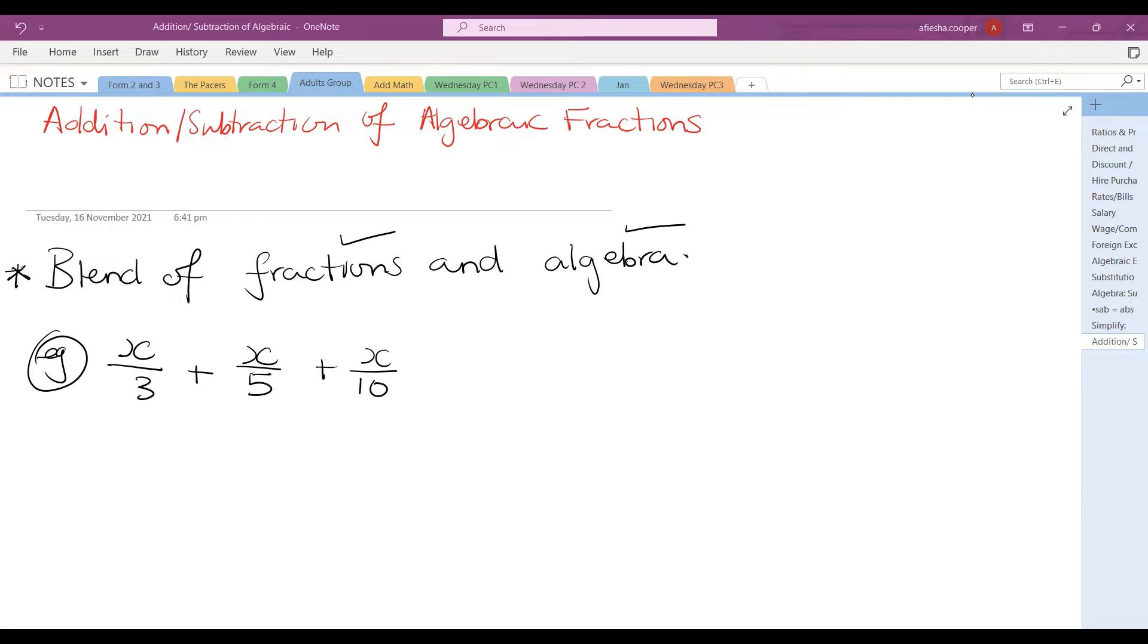The first rule is to find LCM just like regular fractions. So the LCM between 3, 5, and 10. We can say 3 by 5 is 15, but 10 can't go into 15. So 3 by 10, we could try 30. And we always try to find the lowest common multiple, lowest being the key word.